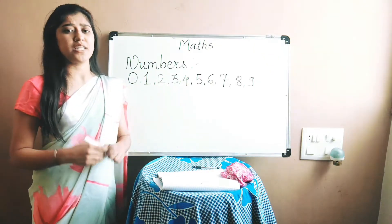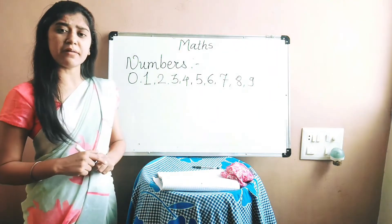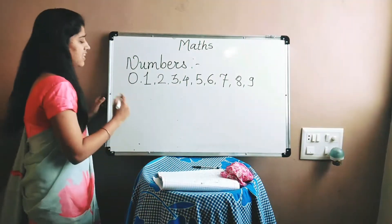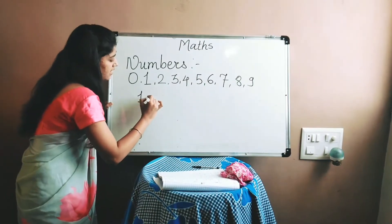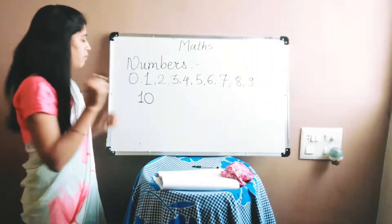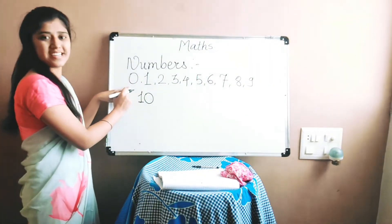But how you can write the number 10? How you can write? 1, 0, 10. Means 10 is the combination of 1 and 0. Right?